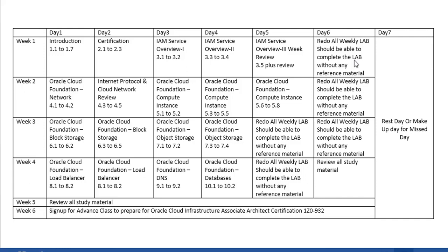On week two, you will go through Oracle Cloud foundation networking — there are a couple of chapters. Then we are going to talk about internet protocol (IP) addresses and how they are used in the cloud network. On day three of week two, we cover compute instances, continuing through day four and day five for the remaining compute instance details. Day six again, you work through all the labs done during the week, by heart, without looking at reference material — this way you gain confidence.